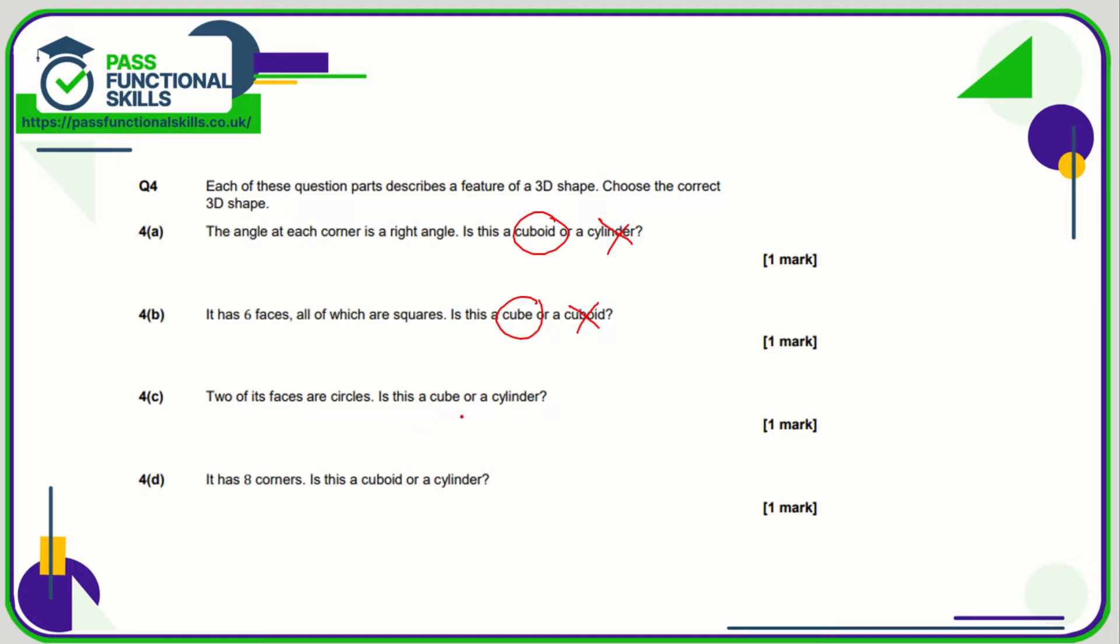Is it a cube or a cylinder? Well, a cube is only squares whereas a cylinder has two circular faces. Eight corners - cuboid yes, cylinder no. A cylinder doesn't have any corners.